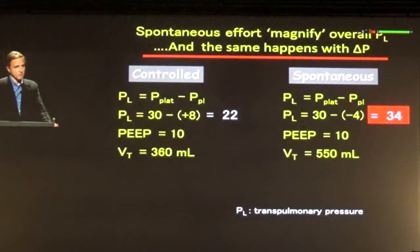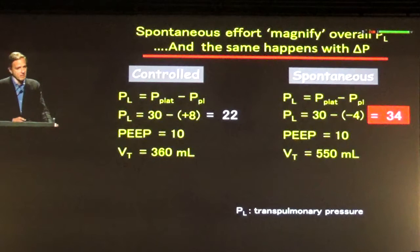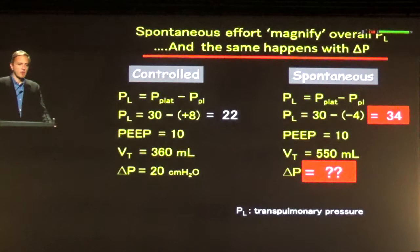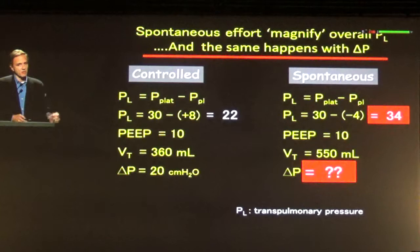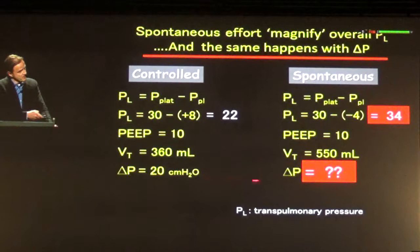But I don't have the esophageal balloon. So what should I do at the bedside — immediately sedate and paralyze this patient, or should I evaluate a little further? The issue is that because the patient triggered the breath, by definition I cannot easily calculate driving pressure, because I don't know the acting forces at end inspiration.